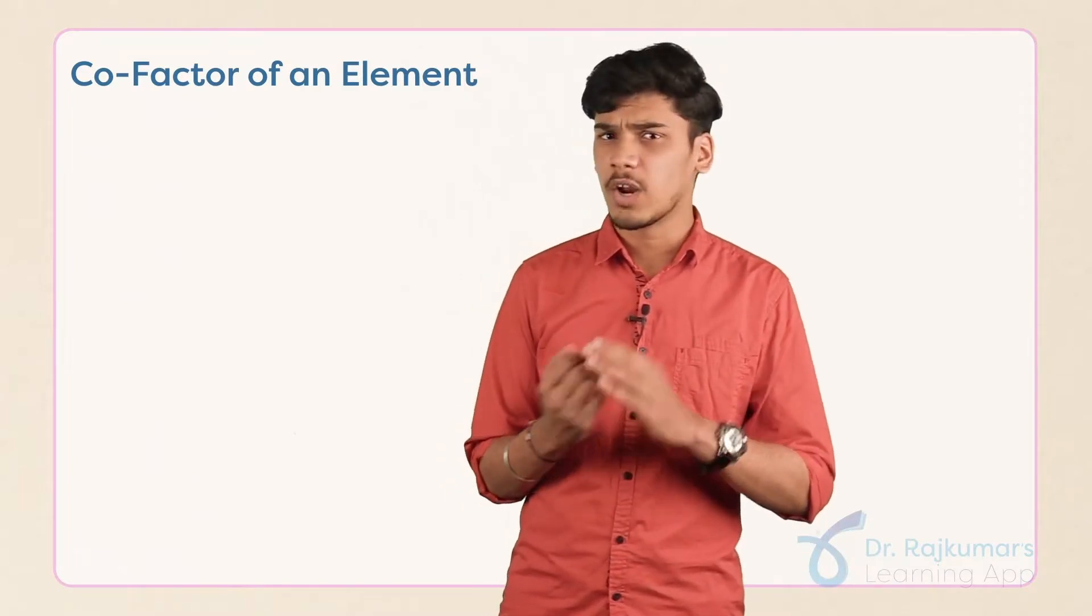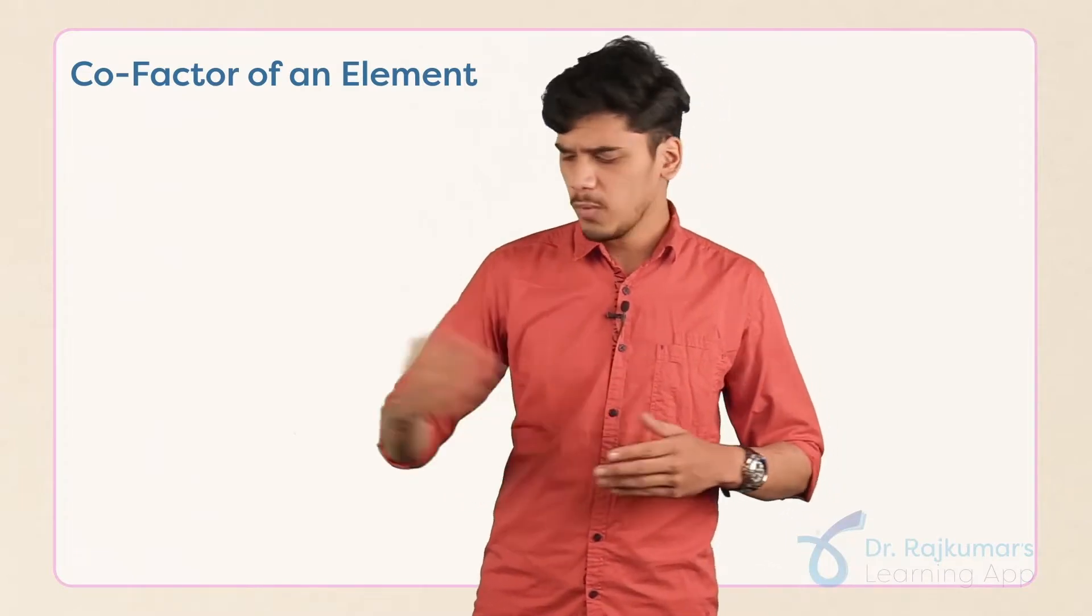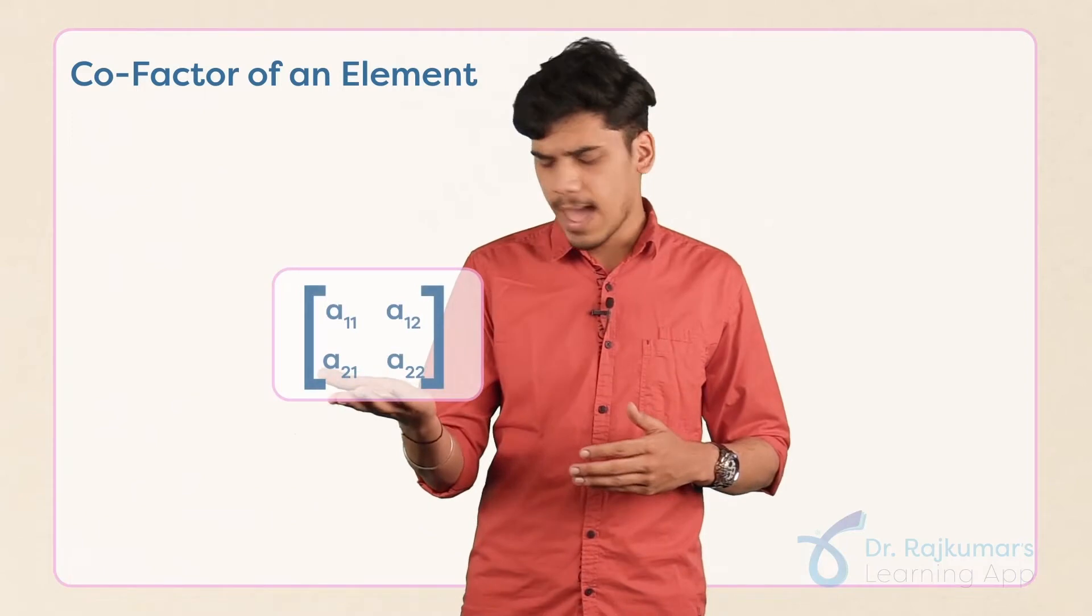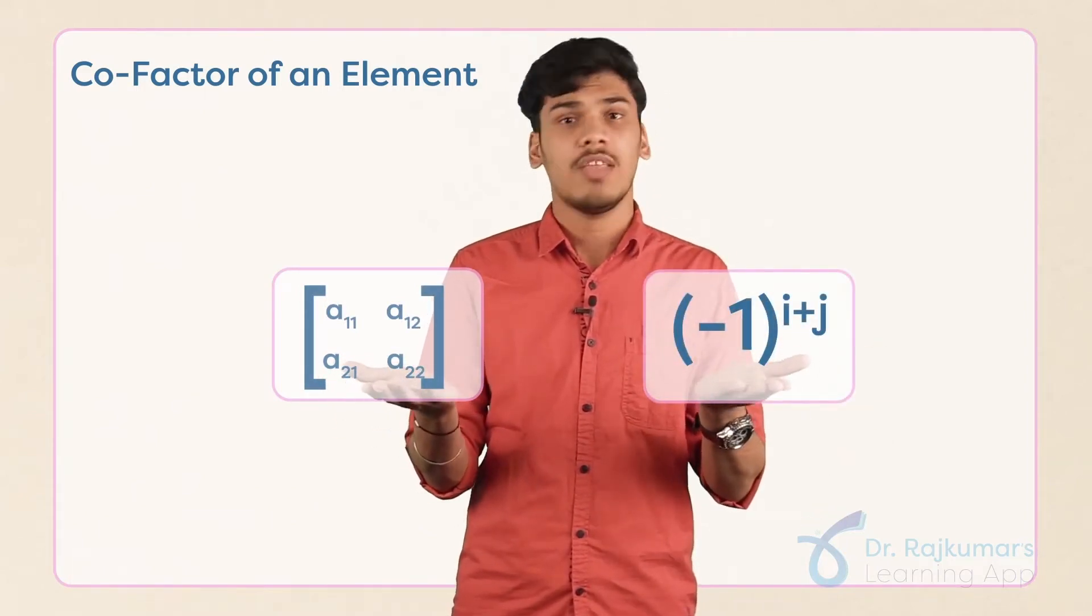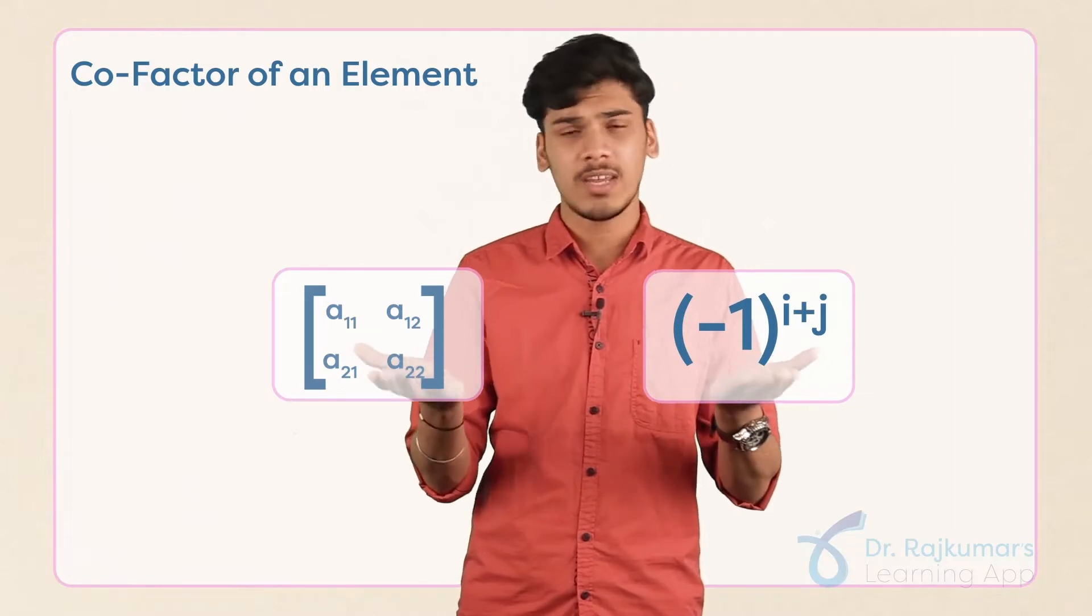How do you find the cofactor of any given element? You first take the minor of the element and multiply it with minus 1 power i plus j. Then you will be getting the cofactor of the given element.